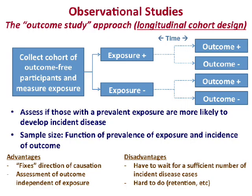A cohort study design involves collecting a group of outcome-free participants, measuring the exposure on all individuals, then waiting while different outcomes occur. The goal is to assess if those with prevalent exposure have different outcome frequencies than those without. Sample size is a function of the prevalence of the exposure — rarer exposures require larger studies — and also depends on the incidence rate of the outcome.